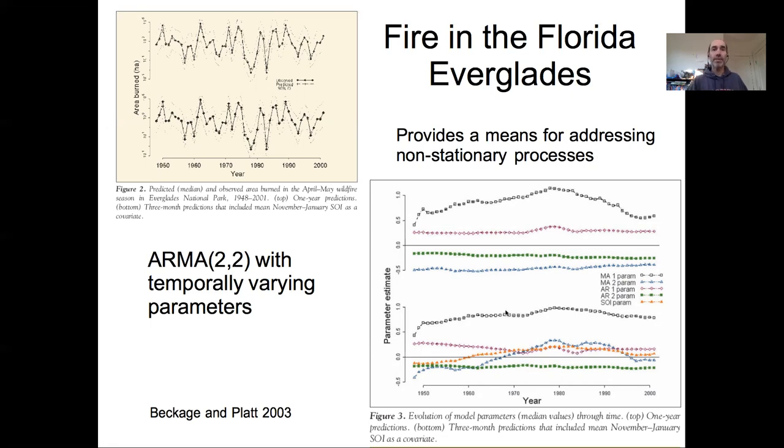And to capture that longer term changes in the fire regime, what Brian did is he allowed the parameters in the AR model to actually themselves vary through time. So he had moving average parameter one and two, autoregressive lag one and two, and allowed the parameters in the model to actually vary as an autocorrelated process itself. So he has a process model, which in this case happens to be a time series model, but he has autocorrelated parameters in the hierarchical level of this model.